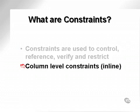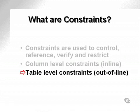There are different levels of constraints. Constraints can be column level, sometimes called inline, and table level, sometimes called out of line. Column level constraints are attached to individual columns within a table. A table level constraint is attached to the table as a whole.